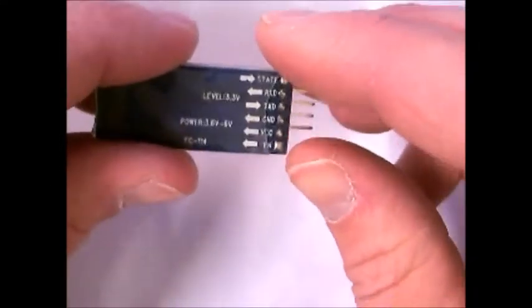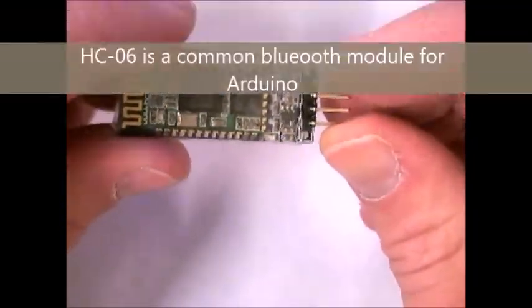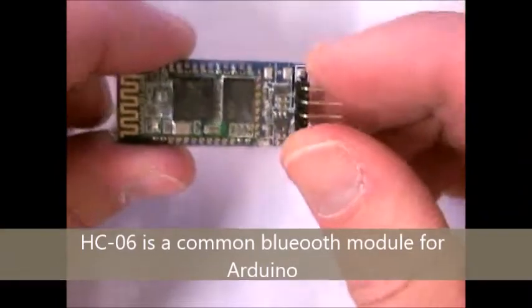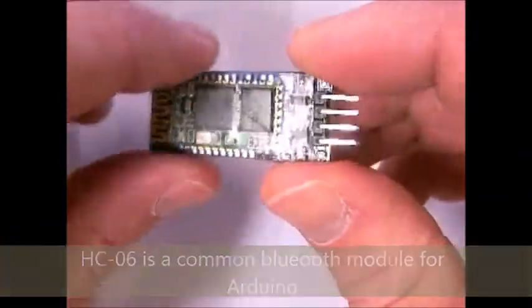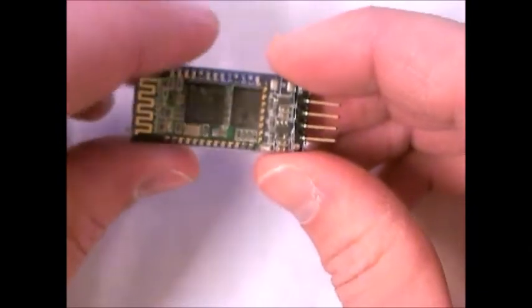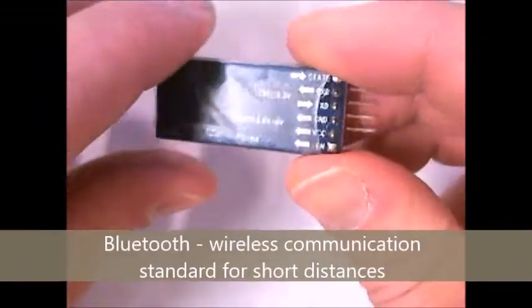In this tutorial we're going to go over the Bluetooth module. This is an HC606 and you can basically get these anywhere you happen to look for a Bluetooth module online. Bluetooth is just a wireless communication protocol that's used in a lot of smart devices, so it's handy to have.